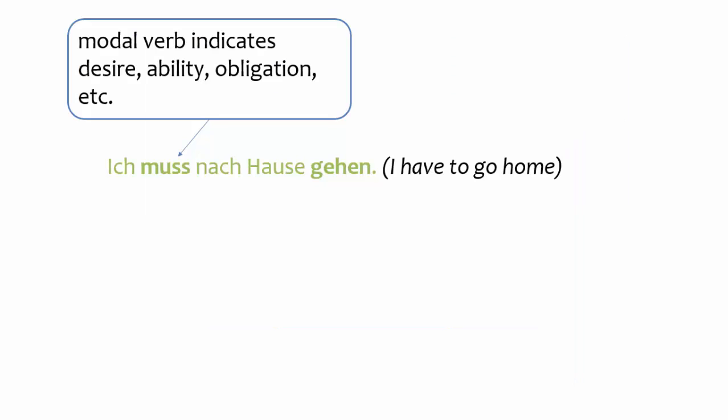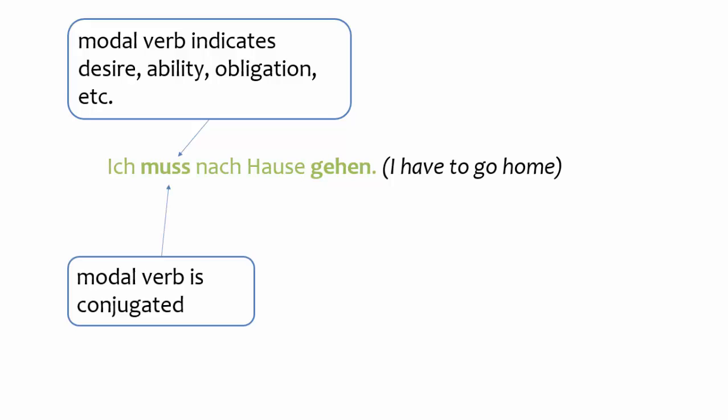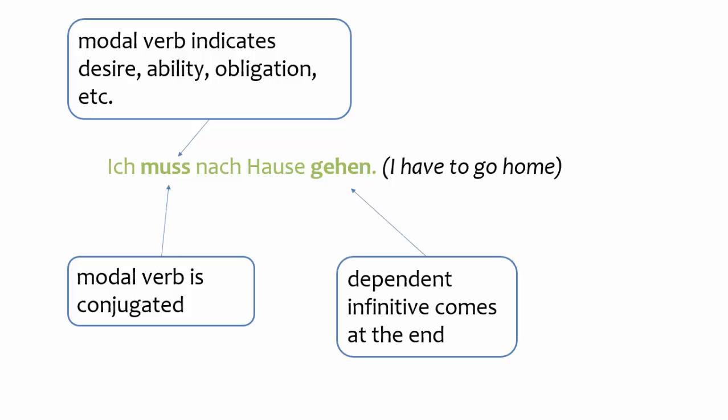You will remember that sentences with modal verbs in the present tense are formed with a conjugated modal verb plus a dependent infinitive. The dependent infinitive comes at the end of the clause.